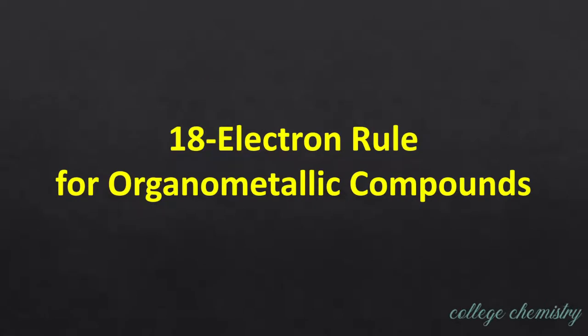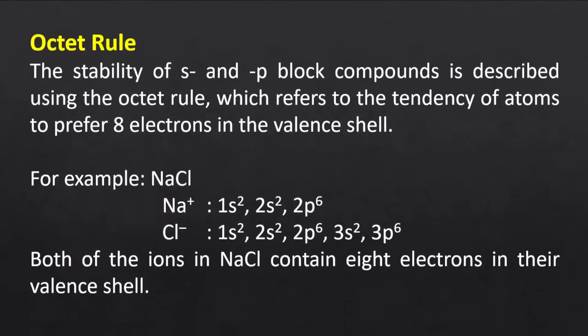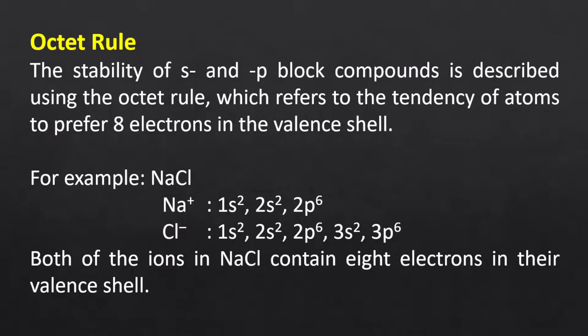The next topic is the 18 electron rule for organometallic compounds. Before moving to the 18 electron rule, let us recall the octet rule. The stability of S and P block compounds is determined using the octet rule, which refers to the tendency of atoms to prefer 8 electrons in the valence shell — that is, the sum of ns and np electrons must equal 8, achieving the same electronic configuration as the noble gas. For example, in sodium chloride, sodium ion has configuration 1s² 2s² 2p⁶ and chloride ion has 1s² 2s² 2p⁶ 3s² 3p⁶, both with 8 electrons in the valence shell.